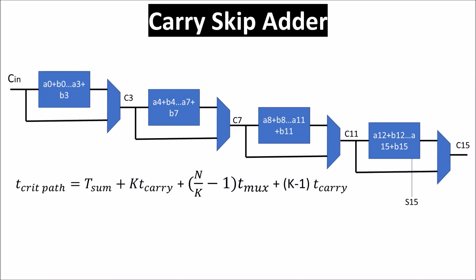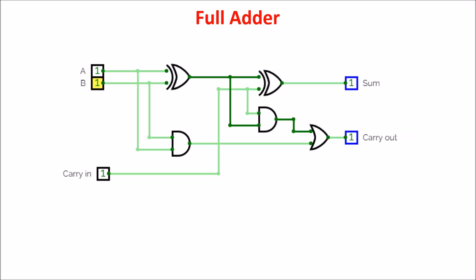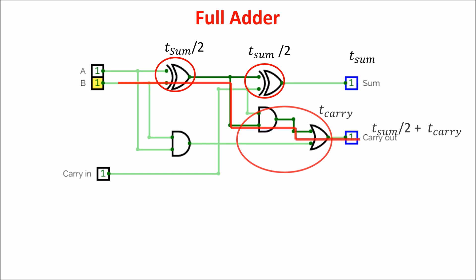This video is about the carry skip adder, which is an adder faster than the conventional ripple carry adder. First of all, we remember the full adder working. We call the delay of the XOR gate T sum divided by 2, and the delay of the AND and OR gates T carry.